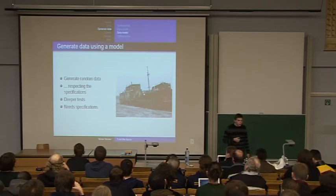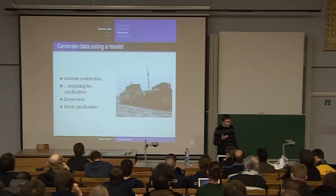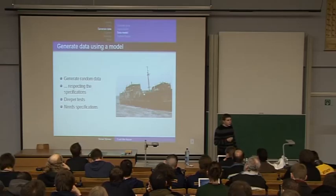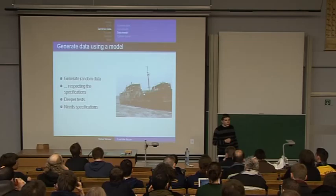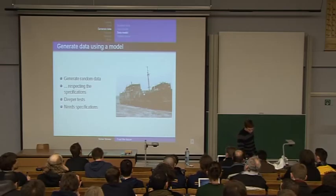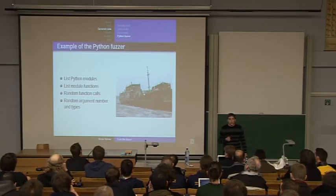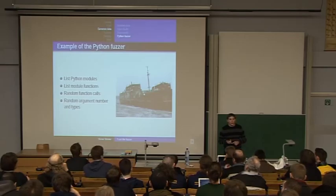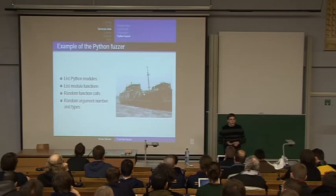The second main technique is to generate data using a model, which means you read the specification of a format — like PNG — and generate valid data respecting the specification. Such tests go deeper into the program because you pass through the first test that checks whether the file is valid or not. The problem with this model is that you need a specification. An example fuzzer is the Python fuzzer: first, list all Python modules; second, list all functions; then do a random function call with random arguments. It's very simple, but it works very well.